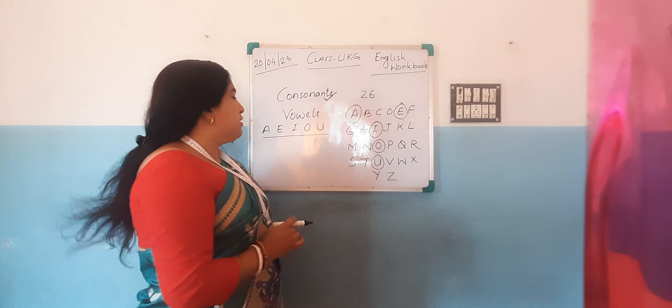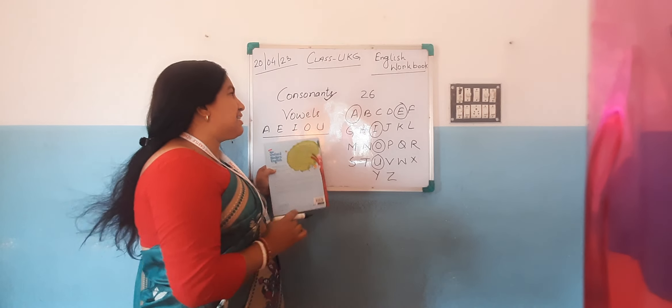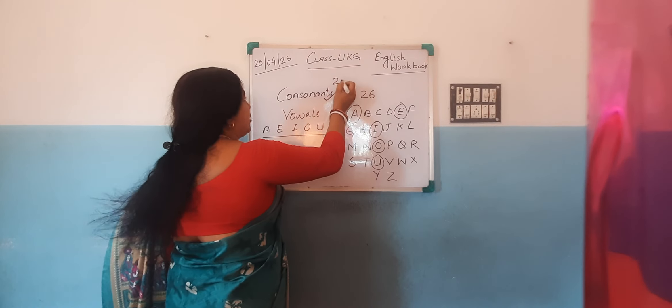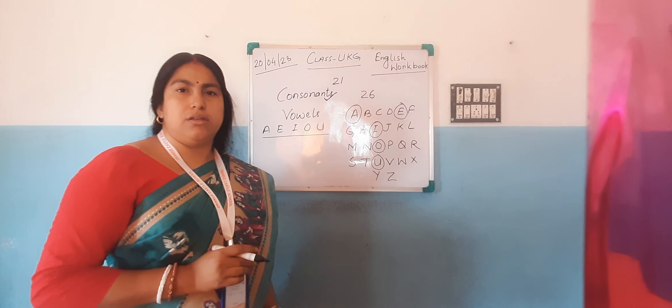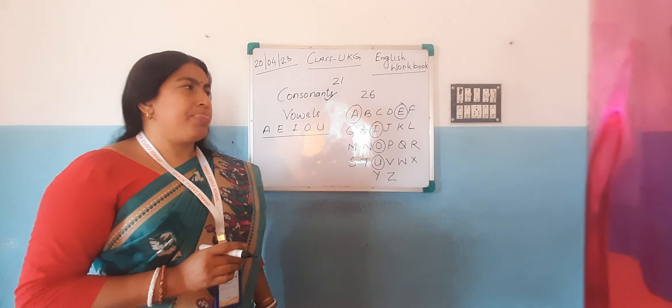So, five vowels and twenty-one consonants. Got it?